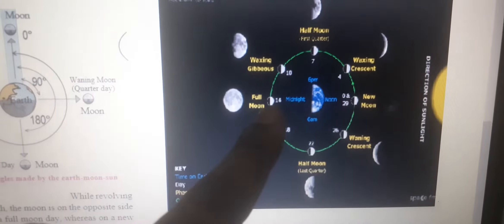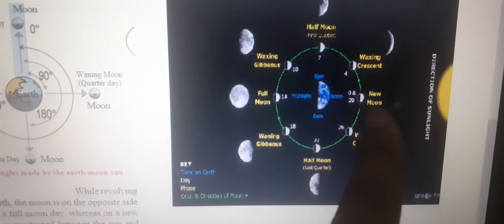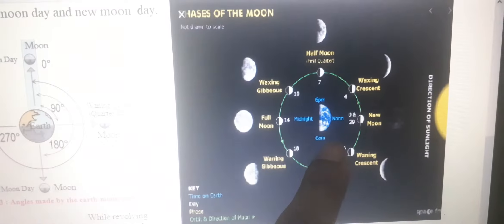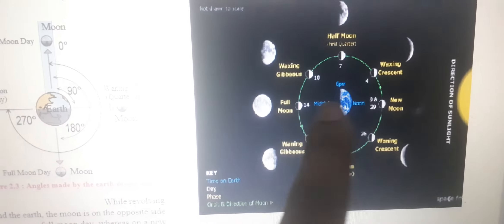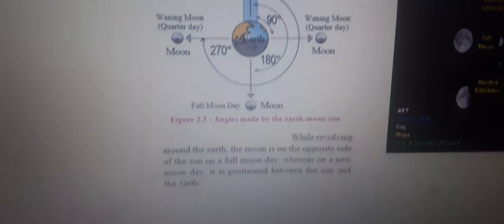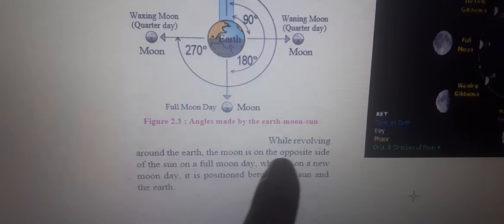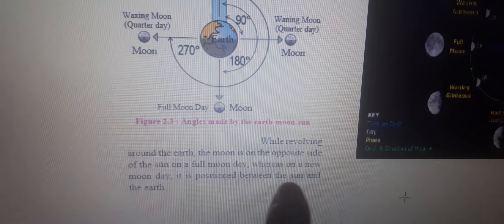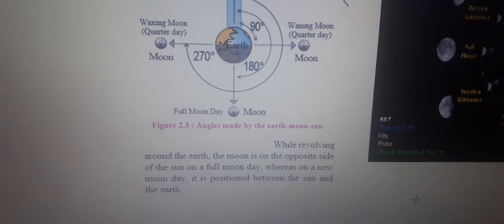Agar Moon ka direction Sun aur Earth ke beech mein hai, to isko bolenge New Moon Day. Diagram mein aapko clear ho jana chahiye — Moon agar Sun ke opposite mein rahega to Full Moon Day bolenge, lekin Moon agar Earth aur Sun ke beech mein rahega to New Moon Day bolenge. Is this clear? By this way you can understand.